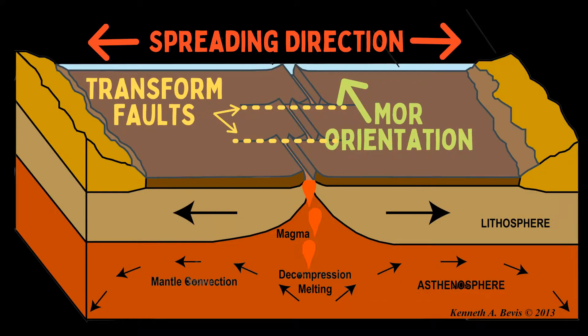That zigzag pattern is basically what happens when you try to draw a straight line on a curved surface. Spreading centers are these straight lines, but they are breaking a curved surface, so transform boundaries form to help accommodate some of that divergent motion.